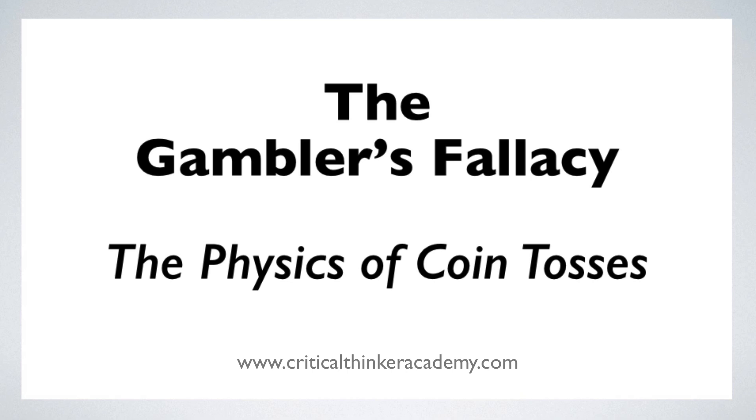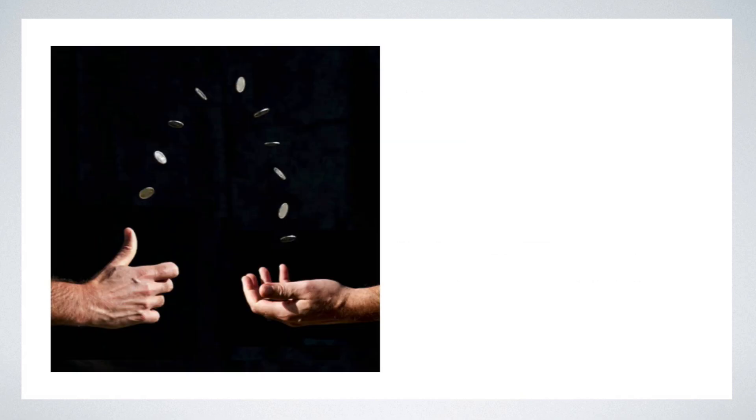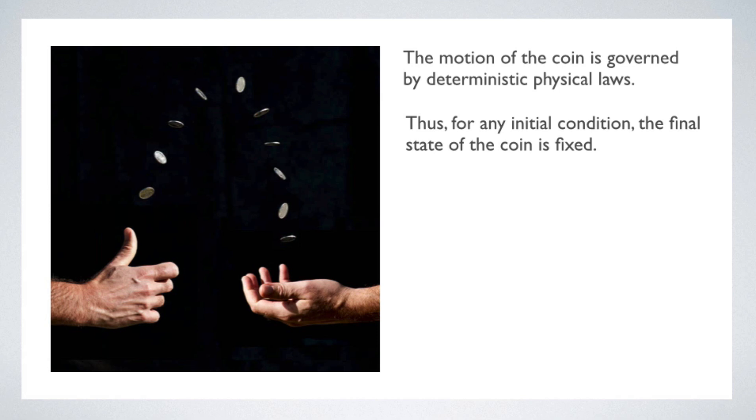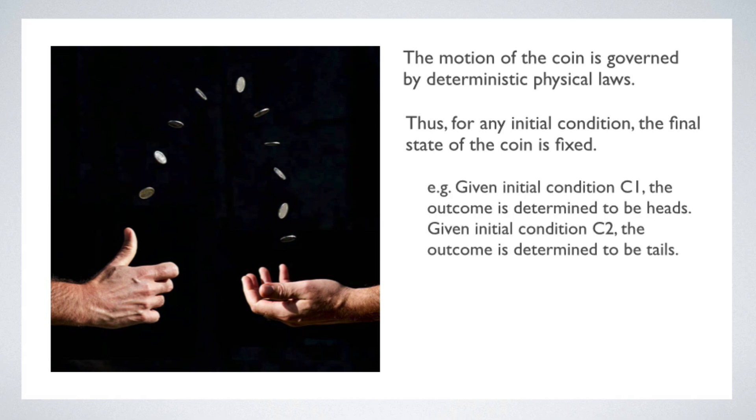Now that's a general claim. Another type of objection focuses on the detailed physics of particular cases and looks for discrepancies between the actual behavior and the behavior of an idealized chance setup. I want to look at both of these kinds of objections because I think the issues they raise are really interesting. Here's one way to present the objection based on deterministic laws. First, assume that the motion of the coin is in fact governed by deterministic physical laws. If so, then for any initial condition, the final state of the coin is determined. On some set of initial conditions, it will land heads. On some other set, it will land tails.